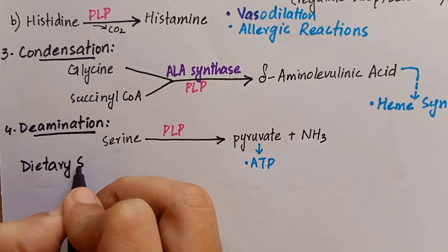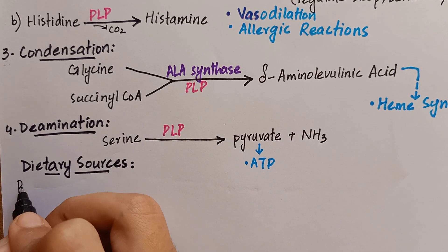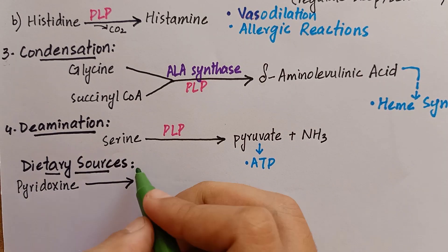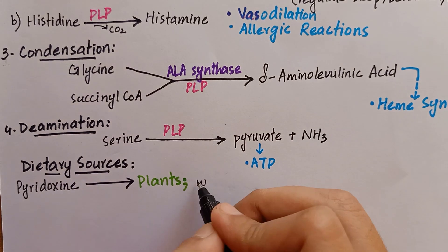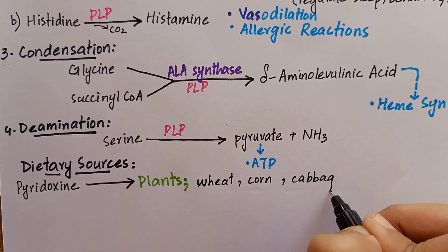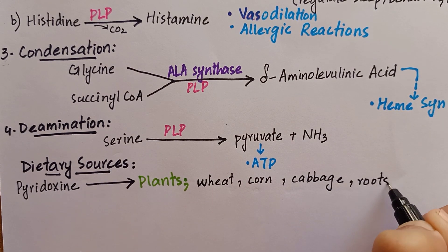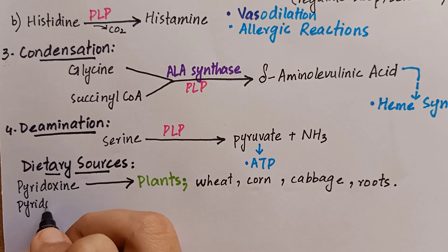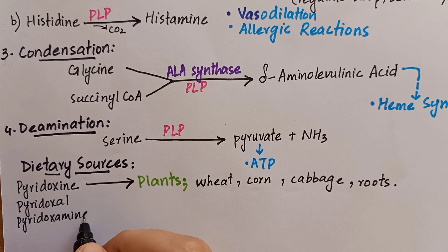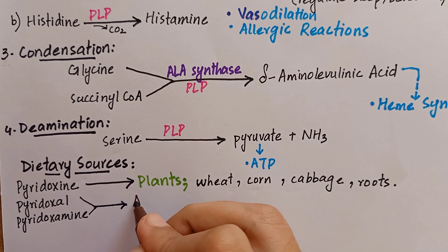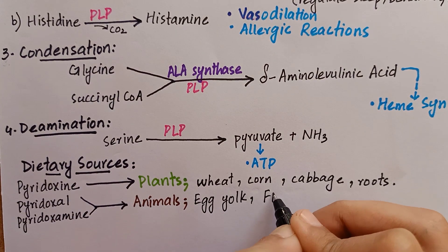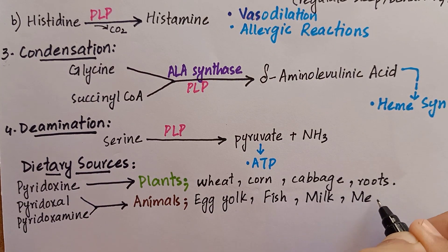Coming to the dietary sources, pyridoxine is primarily present in plants such as wheat, corn, cabbage, and roots, while pyridoxal and pyridoxamine are found in animal foods such as egg yolk, fish, milk, and meat.